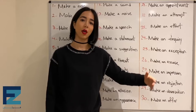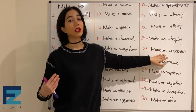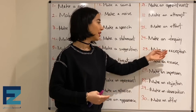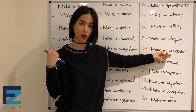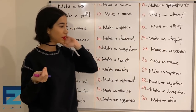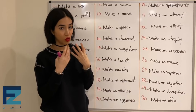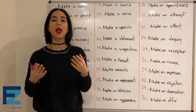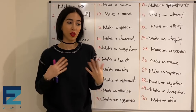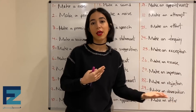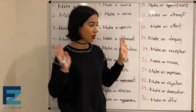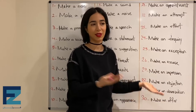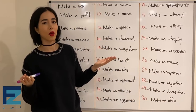Number twenty-five: make an exception — means to not include someone or something in something else. یعنی کسی رو متمایز کردن، داخل چیزی نکردن.